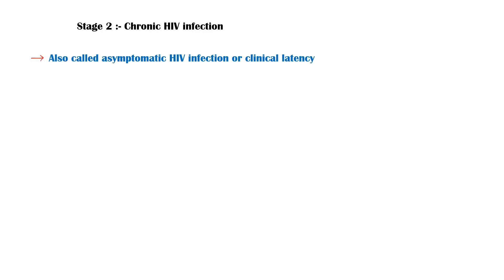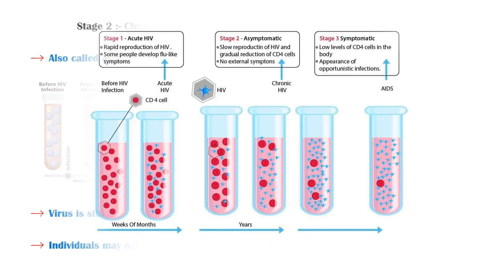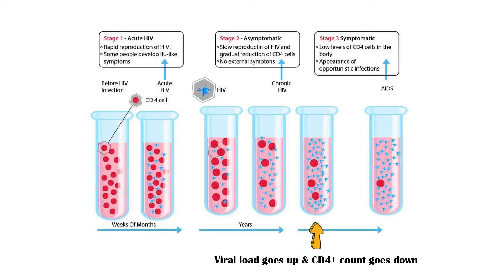Stage 2 is the chronic HIV infection, also called asymptomatic HIV infection or clinical latency. The virus is still active in this phase but reproduces at very low levels, and individuals may not have any symptoms. Without taking HIV medicine, this period may last a decade or longer, but some may progress faster into the next stage. Despite being asymptomatic, people can still transmit HIV to others during this phase. At the end of this phase, the viral load goes up and the CD4 cell count goes down. People who take HIV medicine as prescribed may never progress into stage 3.